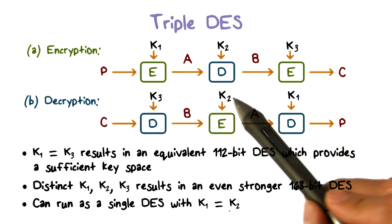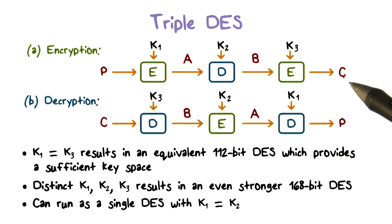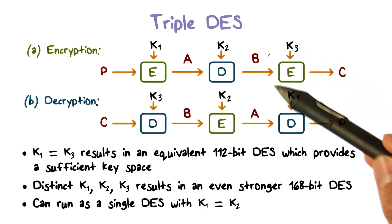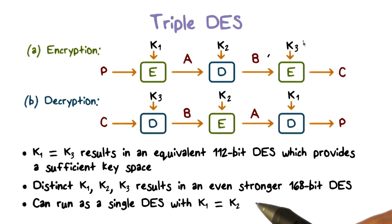If we set key two the same as key one, then the triple DES has in effect become a single DES with key three. This is useful for compatibility. For example, a triple DES device can be configured to communicate with a single DES device by simply setting key two the same as key one.